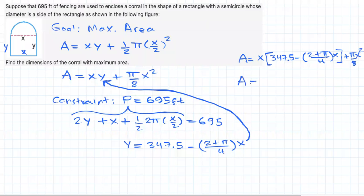Simplifying this quadratic function, we should get this: A equals 347.5 times x minus (4 plus pi) over 4 times x squared.